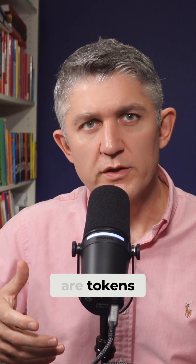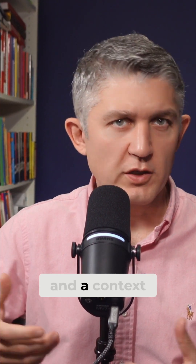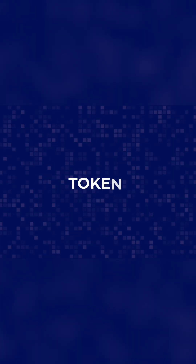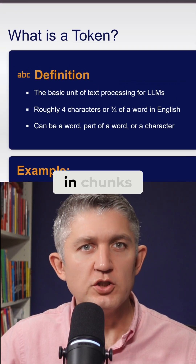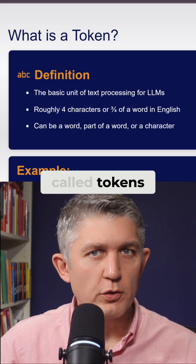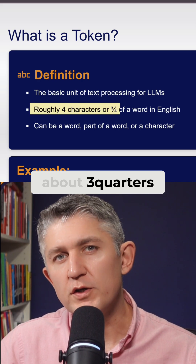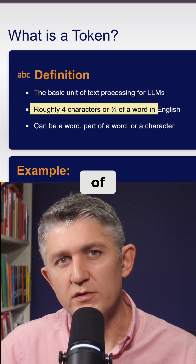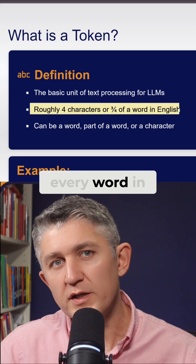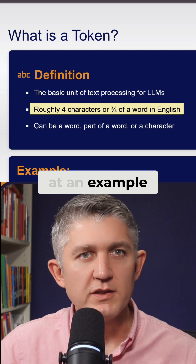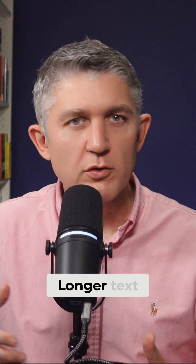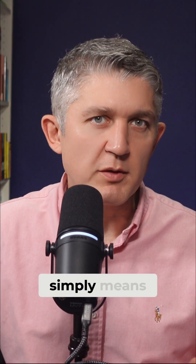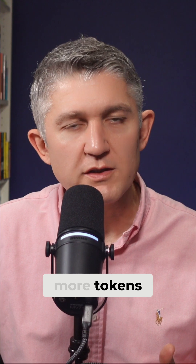Let's talk about what are tokens, prompts, and context. LLM models read text in chunks called tokens. It's roughly about three quarters of every word in English. Don't obsess over the exact counts just now. Longer text simply means more tokens, and more tokens means more costs.